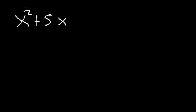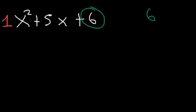In this video we're going to focus on factoring trinomials the easy way. Let's start with x squared plus 5x plus 6. How can we factor it? Notice that the leading coefficient is 1. When you see that, look at the number 6. Find two numbers that multiply to 6 but add to the middle term 5.